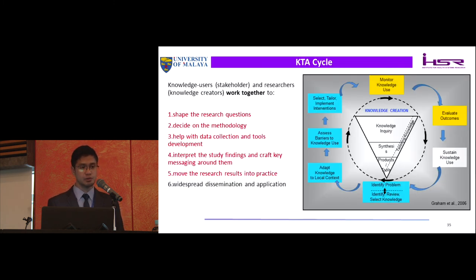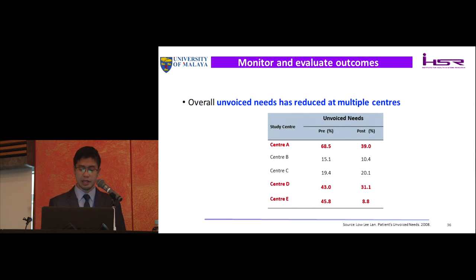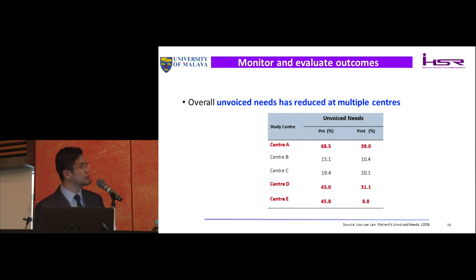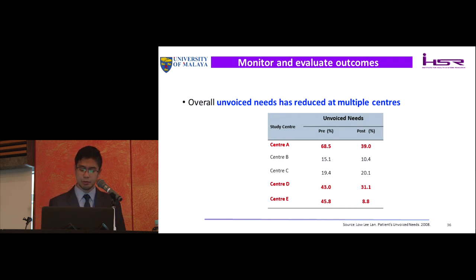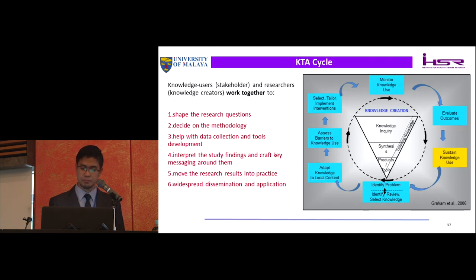Once the issues were rectified, they rolled out the intervention packages again, monitoring knowledge use and evaluating outcomes. Overall, unvoiced needs reduced at multiple centres, especially those with a high baseline. Significant reductions were seen at centre A from 70% to 40%, centre D from 40% to 30%, and centre E from 45% to 8%. Centres B and C had low baseline unvoiced needs, and due to low sample size, significant reduction could not be demonstrated. Overall, the intervention package was very much useful in tackling the issue of unvoiced needs.